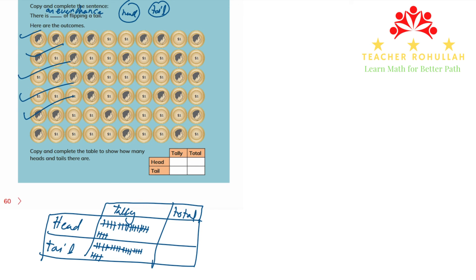For the last student, we have three heads, so I record three tally marks. If there are three heads, there will be seven tails. So I record seven tally marks for the tails.